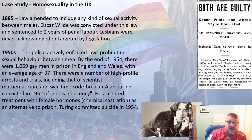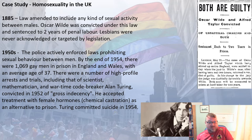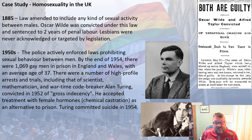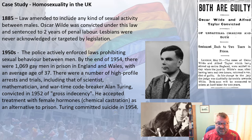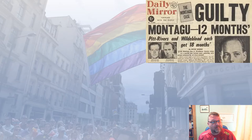Moving to the 1950s, homosexuality laws were actively enforced. By the end of 1954, there were 1,069 gay men in prison in England and Wales, with an average age of 37. There were a number of high-profile arrests, including that of the scientist, mathematician, and wartime code-breaker Alan Turing. Turing broke the Enigma code, which significantly helped win World War Two. However, he was convicted in 1952 of gross indecency and, rather than go to prison, accepted chemical castration through treatment with female hormones. He died by suicide in 1954 as a result.